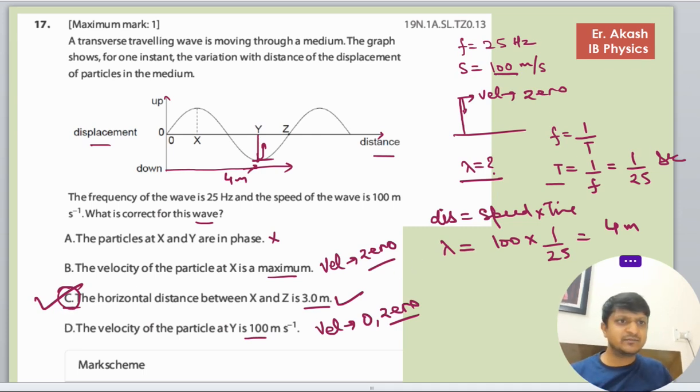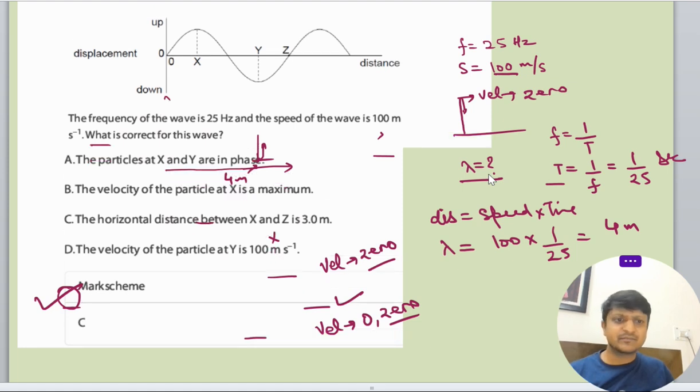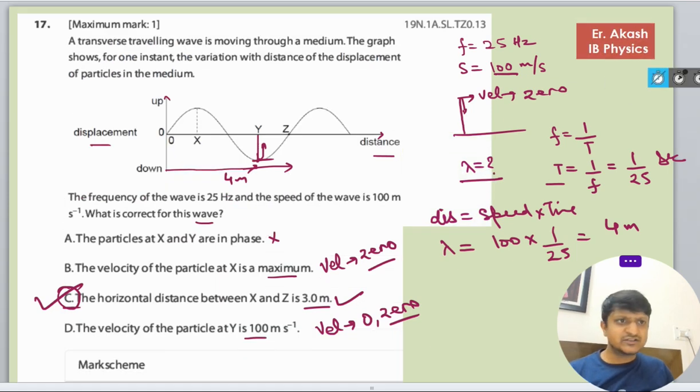So now we will check the mark scheme. Mark scheme says C is the right answer. So just look at all the answers: it is not in phase, it is coming downward, it is going upwards, and then velocity is not maximum.